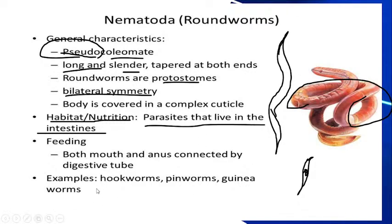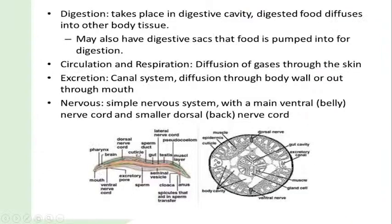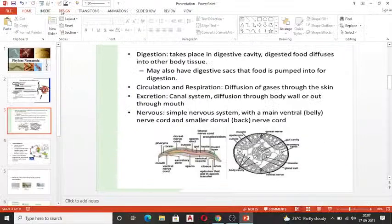Examples include hookworms, pinworms, and guinea worms. Digestion takes place in the digestive cavity, which is well developed with a mouth and anus. Digested food diffuses into other body tissues. Some nematodes have digestive sacs that food is pumped into for digestion. Some nematodes also have rennet cells — a canal system for excretion.